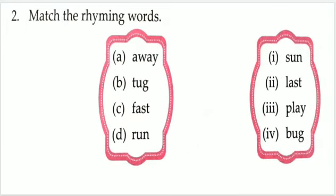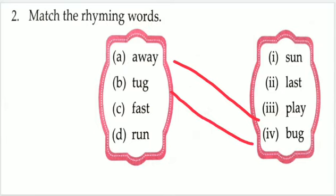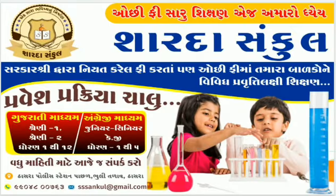Next. Match the rhyming words. Let's see. Away — rhyming word is Play. Tug — rhyming word is Bug. Fast — rhyming word is Last. Run — rhyming word is Sun. Thank you.